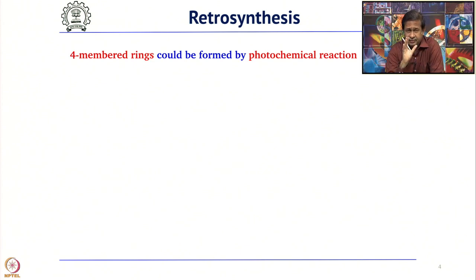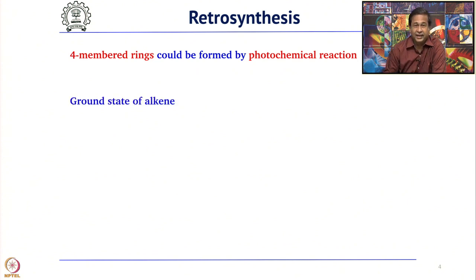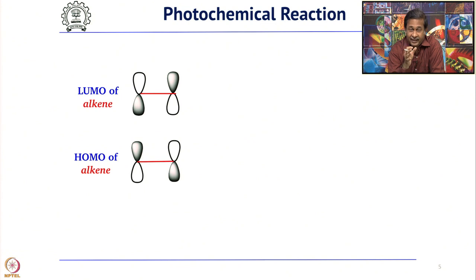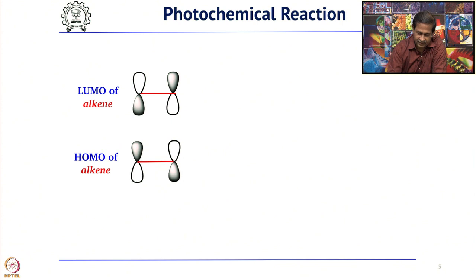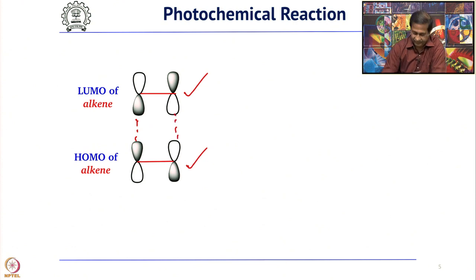When you talk about 4-membered ring synthesis, the first reaction which should come to your mind immediately is a photochemical reaction — the 2+2 cycloaddition reaction. Photochemical reactions are widely applied for making 4-membered rings. You use the HOMO of one alkene and the LUMO of another alkene, giving a nice orbital overlap to form a 4-membered ring.